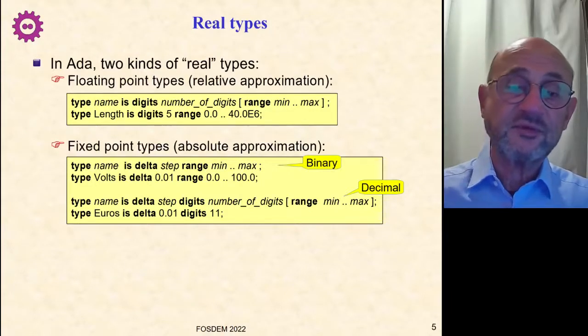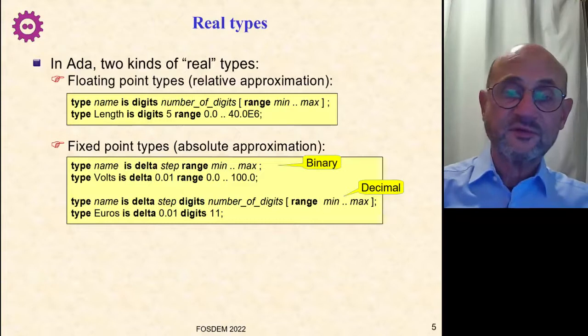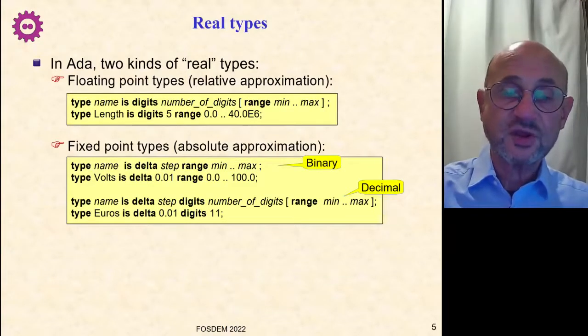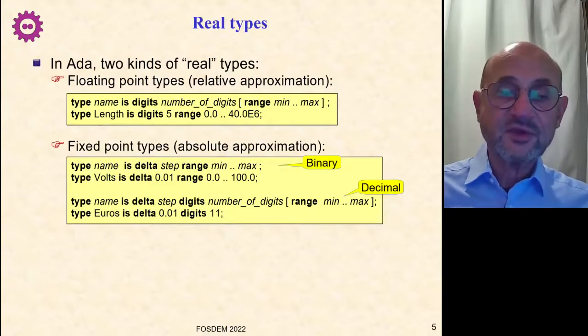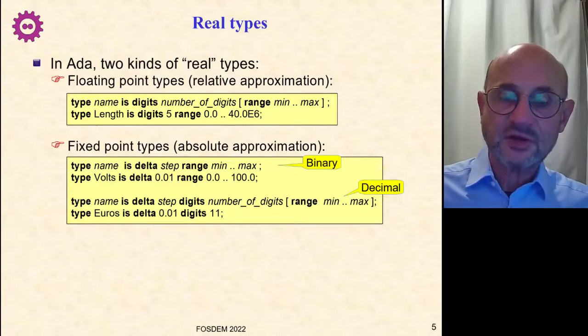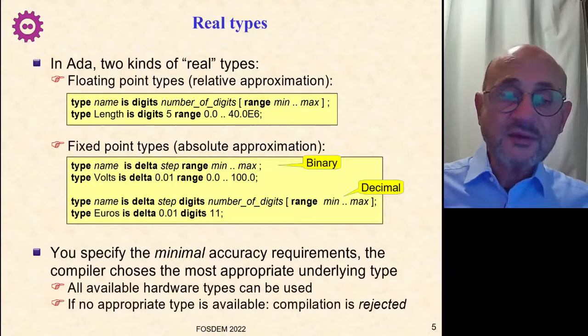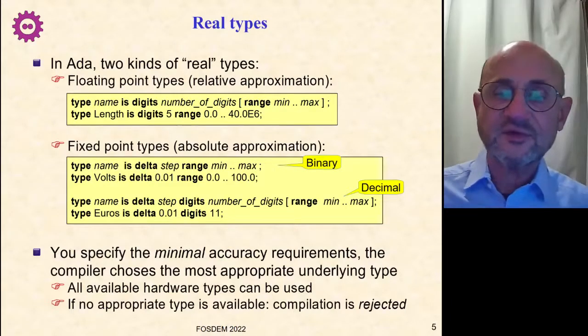And you have fixed point types, they come in two flavors, binary and decimal, but the principle is the same, where you specify the absolute step that you want, the delta, and the range of value. So typical example, my volts here, if I want one hundredth of a volt over the range 0 to 100, or typically for decimal numbers, euros, with a step of 0.01 cent over 11 digits. The decimal numbers correspond on your own machine that have them to binary coded decimals.